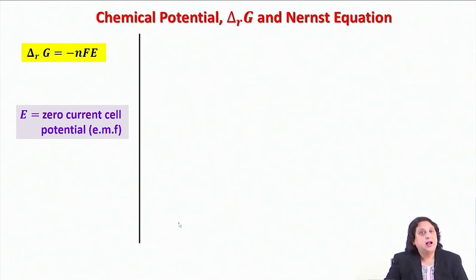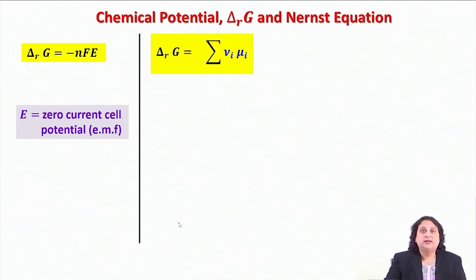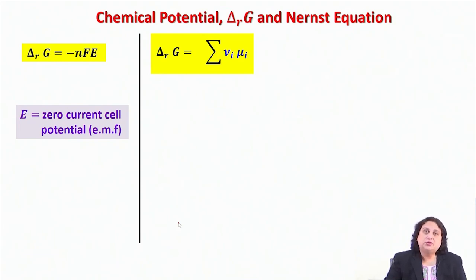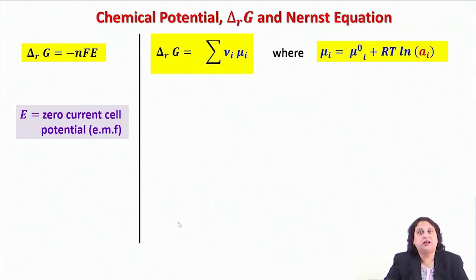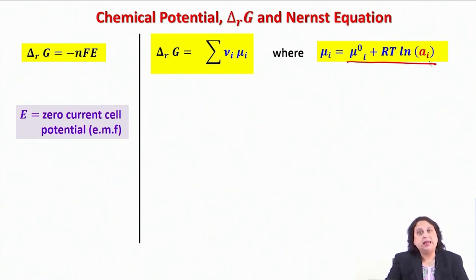On one hand, I have delta_RG equal to minus NFE. On the other hand, I know that delta_RG for the chemical reaction taking place in the cell must equal the sum of ν_i μ_i for a given composition of the reaction mixture. In general, for any component i, I can write down its chemical potential at a given temperature and pressure as μ_i = μ_i° + RT ln A_i.